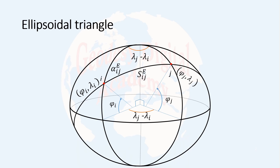Hello and welcome back. Before I start talking about the direct and inverse problems at the surface of the ellipsoid, I need to define an ellipsoidal triangle. Consider two points i and j at the surface of the ellipsoid. Point i has the geodetic coordinates phi i and lambda i, and point j has the coordinates phi j and lambda j.